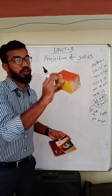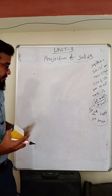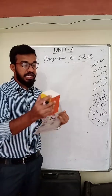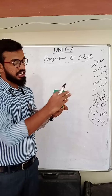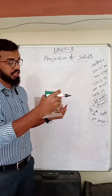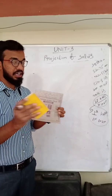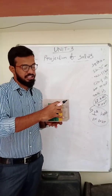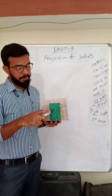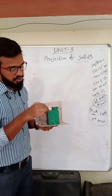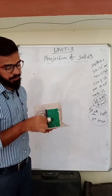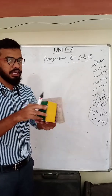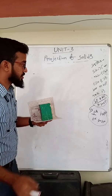So here we are taking a square prism in which the axis is a vertical line. The axis is perpendicular to HP and parallel to VP.